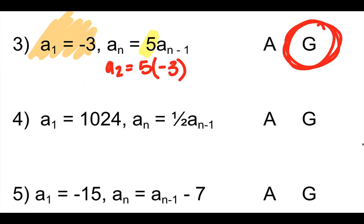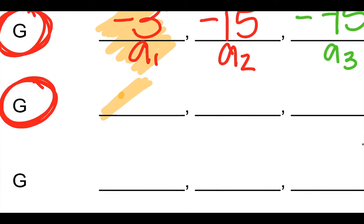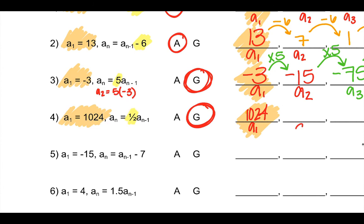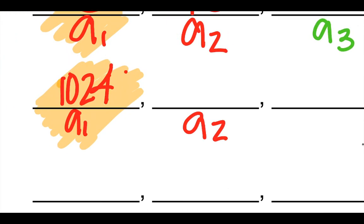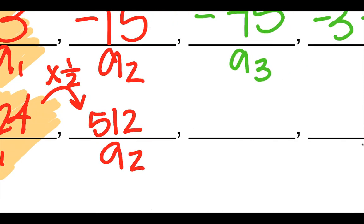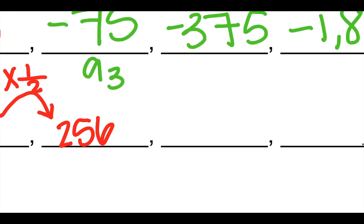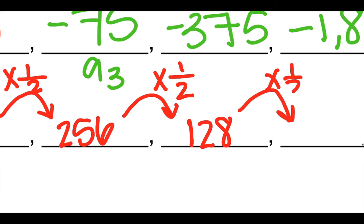Number four: multiplying by one-half tells me it's geometric since we're multiplying, not adding or subtracting. A-sub-one is one thousand twenty-four. To find a-two, I multiply one-half times one thousand twenty-four — multiplying by one-half is the same as dividing by two — so I get five hundred twelve. Then five hundred twelve times one-half gives two hundred fifty-six. Times one-half gives one hundred twenty-eight. Times one-half gives sixty-four.